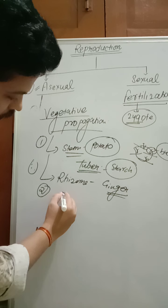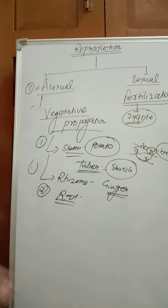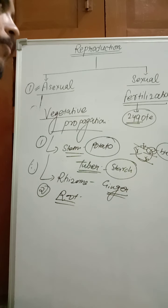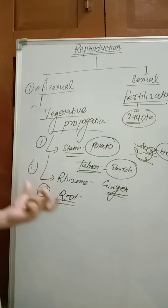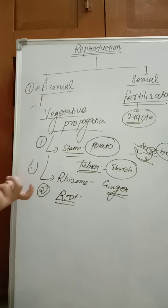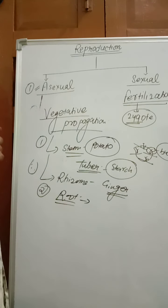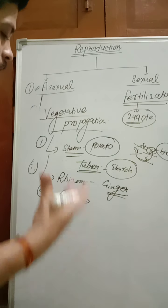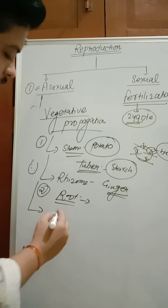Another example of vegetative propagation is root. Root is the lower part of the plant. The main function of root is absorption of water. Other functions include exchange of gases and storage of food material. In radish, carrot, and sweet potato, there are adventitious roots, which are also examples of root vegetative propagation. These roots are able to develop into a new plant.